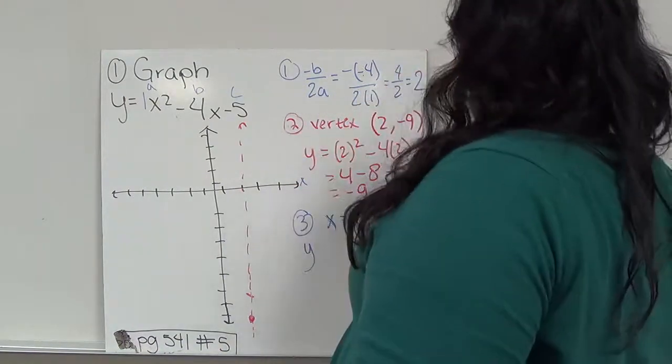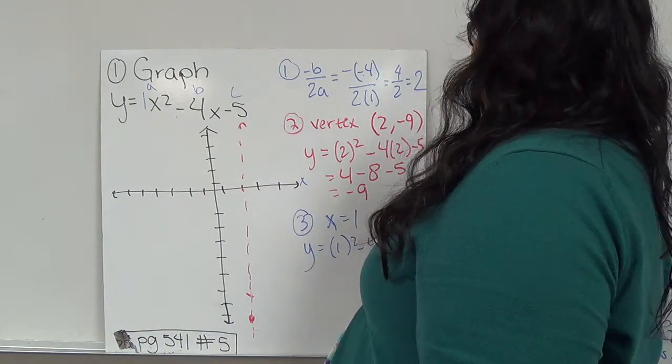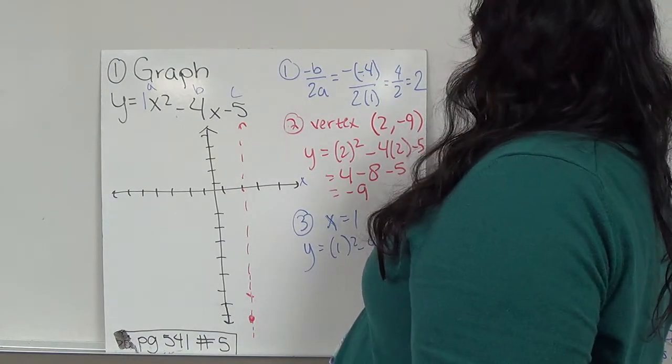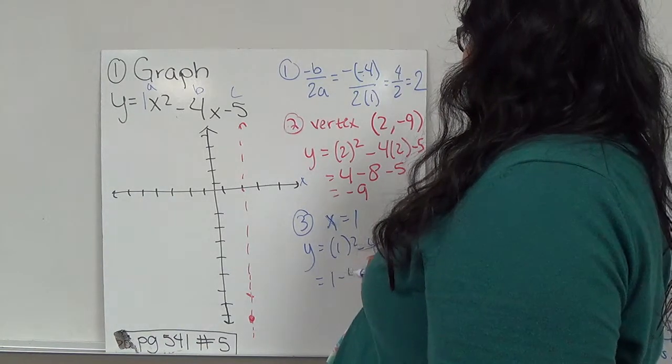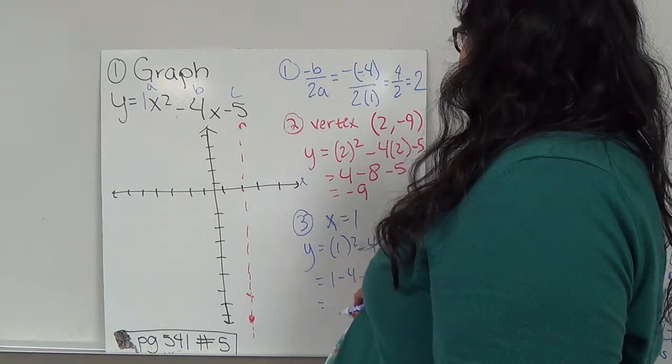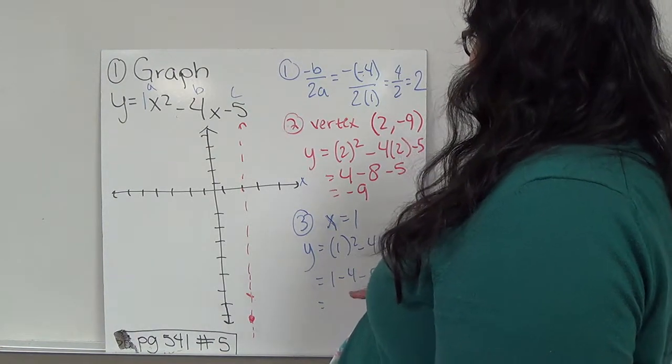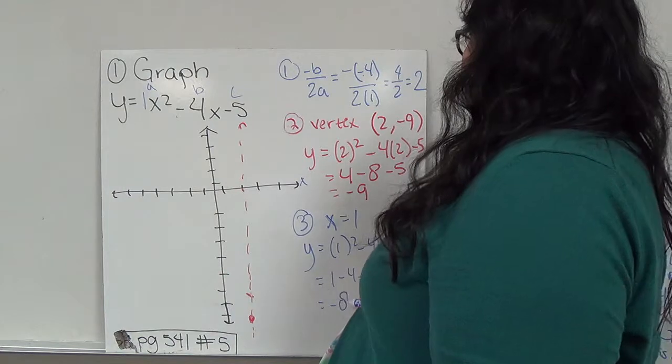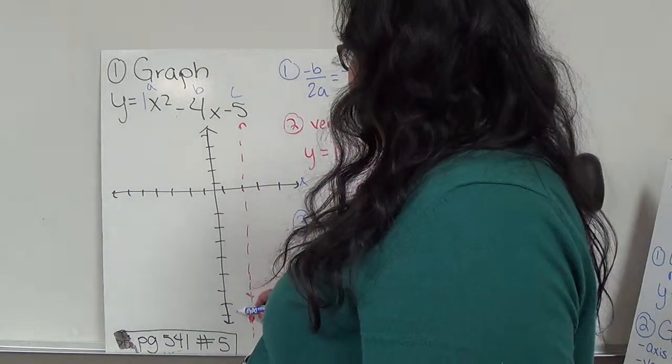And the reason why I'm doing this is because I just need to find a point on one of the sides so I can mirror on the other and I can connect the three dots. So I have 1 squared minus 4 times 1 minus 5. So 1 minus 4 minus 5. This is 1 minus 4 is negative 3, minus 5 is negative 8. So when this is 1, this is negative 8.